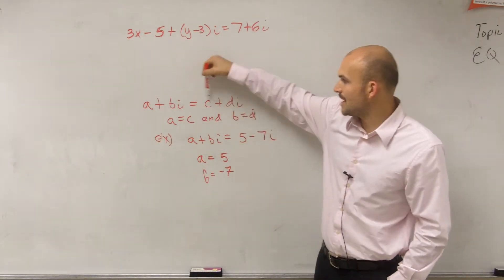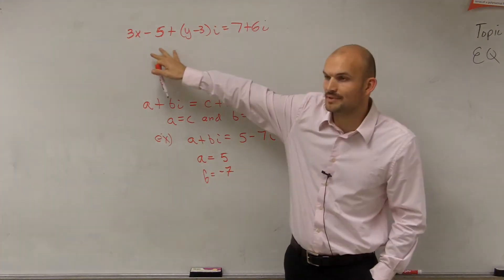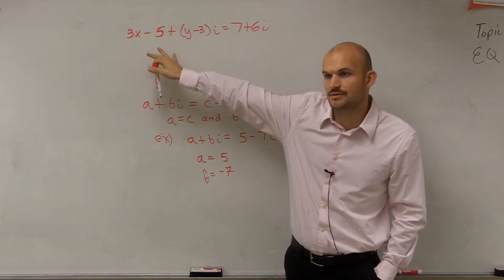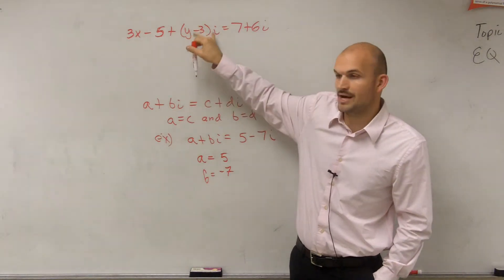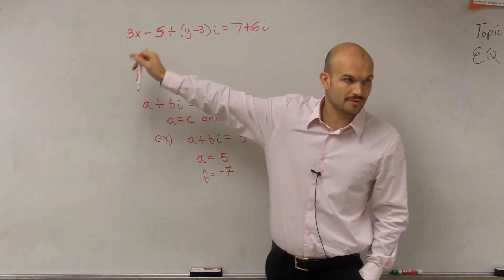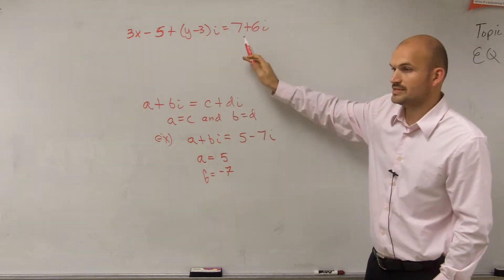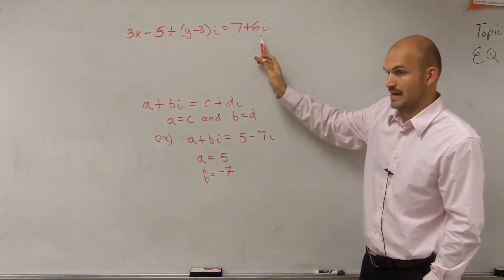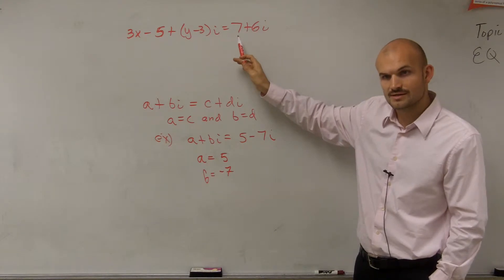If a plus bi is equal to c plus di — is this a complex number? Yes. You have an imaginary part and you have a real part. Is this a complex number? You have an imaginary and you have a real. So yes.